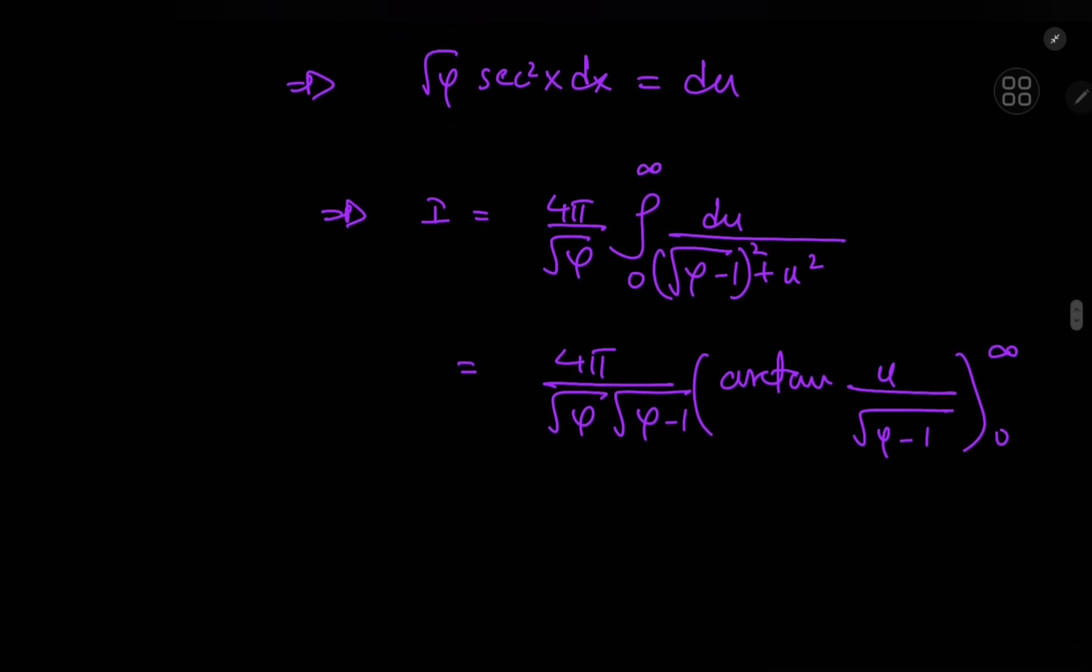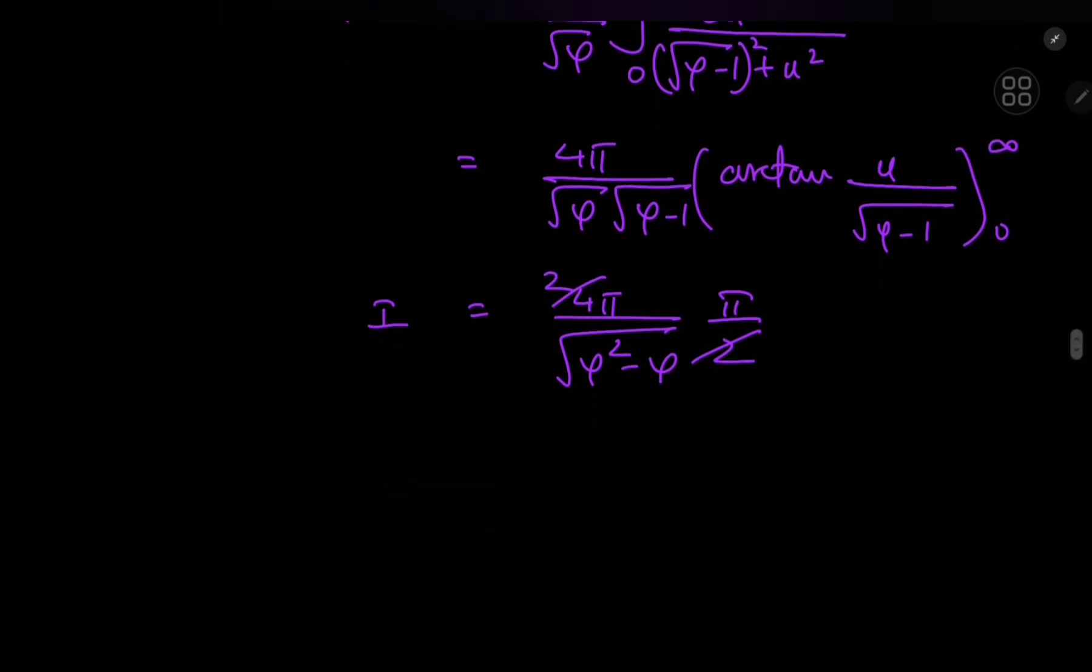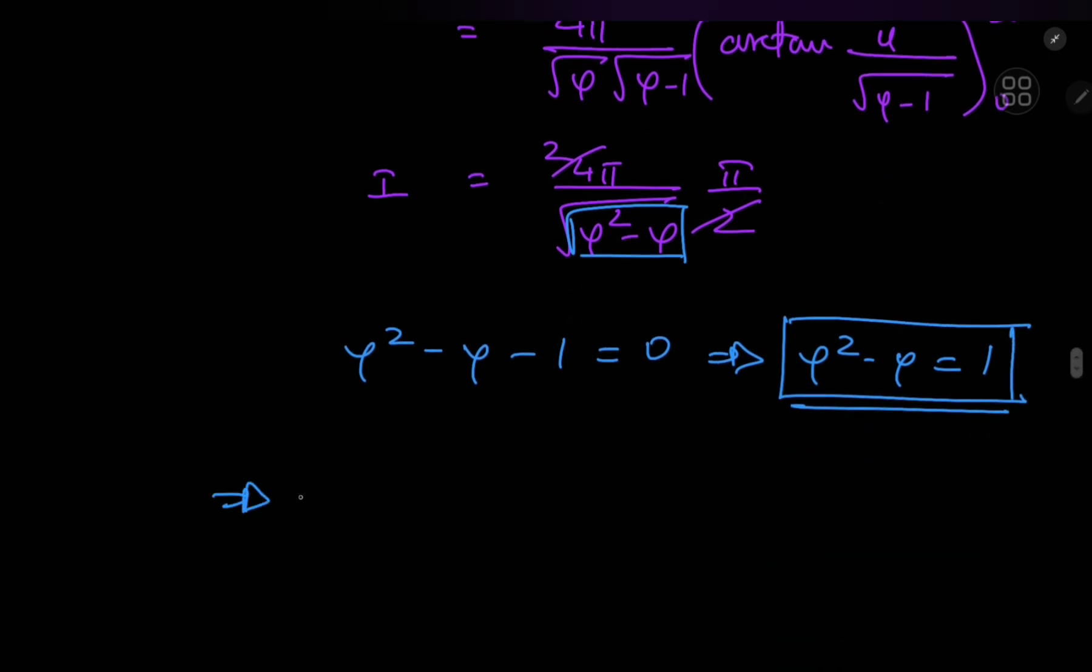So as you approach 0, we get the inverse tangent of 0, which is 0. And as you approach infinity, we approach π by 2. So this means that we have 4π divided by √(φ² - φ) times π by 2. So we see some nice cancellation here. And in the denominator, we have this really nice φ² minus φ term. Now, the golden ratio satisfies this equation. It's φ² minus φ minus 1 equal to 0, which implies that φ² minus φ equals 1, which is very, very convenient indeed.